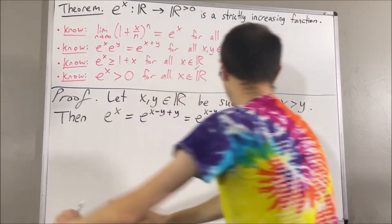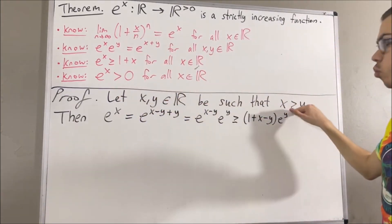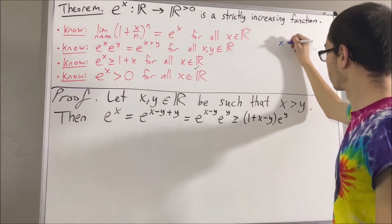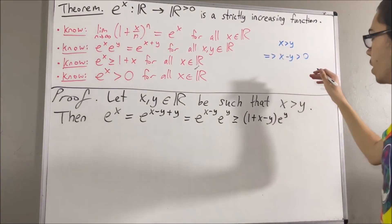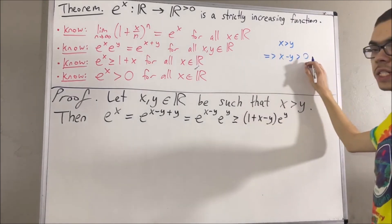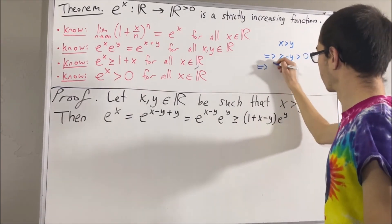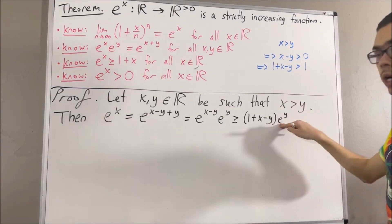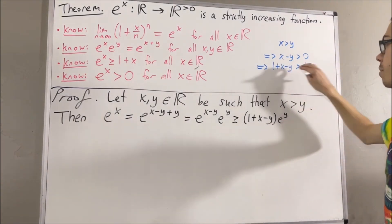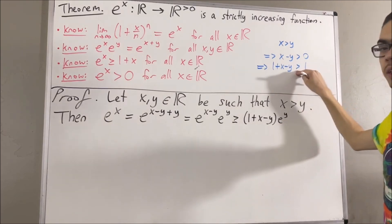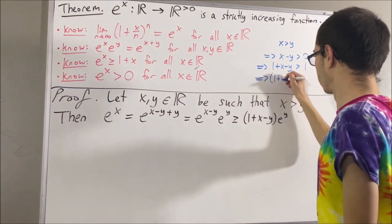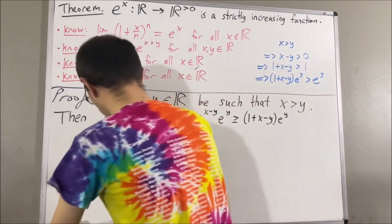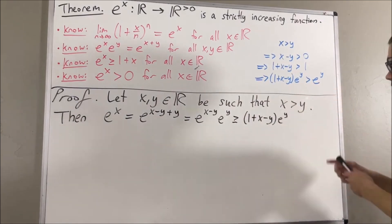Since x is greater than y, we have that x minus y is greater than 0. If we add 1 on both sides of the inequality, we get that 1 plus x minus y is greater than 1. Then, since e to the y is positive, if we multiply it on both sides of this inequality, the sign of the inequality will remain the same. So we get that 1 plus x minus y times e to the y is greater than e to the y.